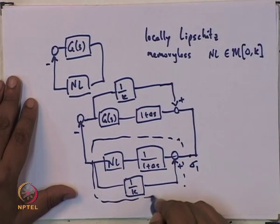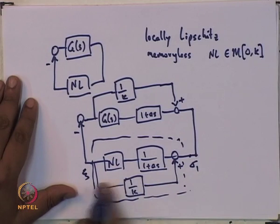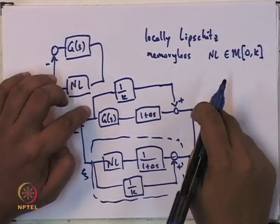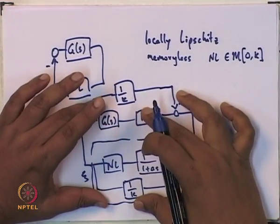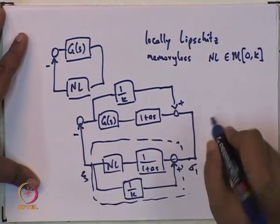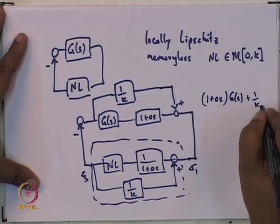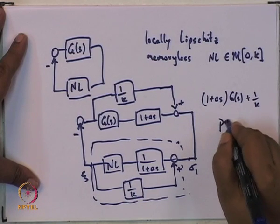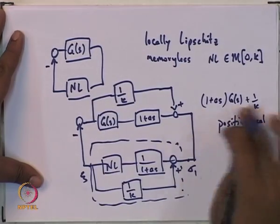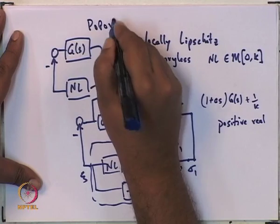This whole thing is the new non-linearity, with ψ as the output and σ₁ as the input. This new non-linearity is passive with respect to σ₁ and ψ. Then if the resulting linear plant can also be shown to be passive, the interconnection is passive and therefore asymptotically stable.